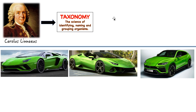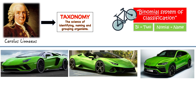What did Linnaeus start? He started the idea which we call the binomial system of classification. 'Bi' means two — like bicycle, which has two wheels. 'Nomial' means name. So he started this two-name classification system.